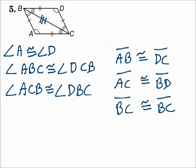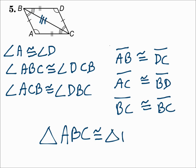For our congruent statement, triangle ABC is congruent to — make sure you get the order right — triangle DCB.